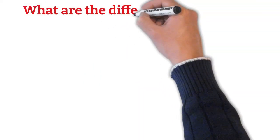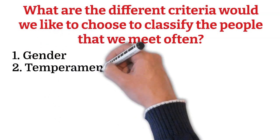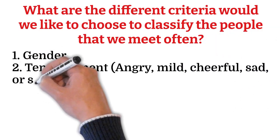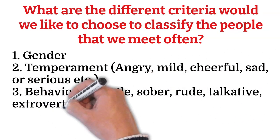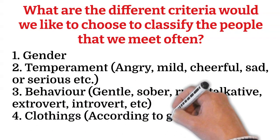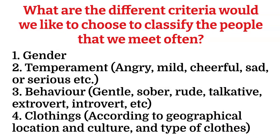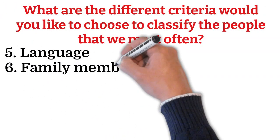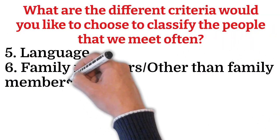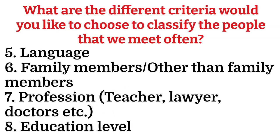Let's learn what different criteria we could use to classify the people we meet often. We can classify them by: their gender; temperament — whether angry, mild, cheerful, sad or serious; behavior — whether gentle, rude, talkative, extrovert, introvert, etc.; clothing — according to geographical location and culture; language; whether they are family members or not; profession — teacher, lawyer, doctor, etc.; and educational level.